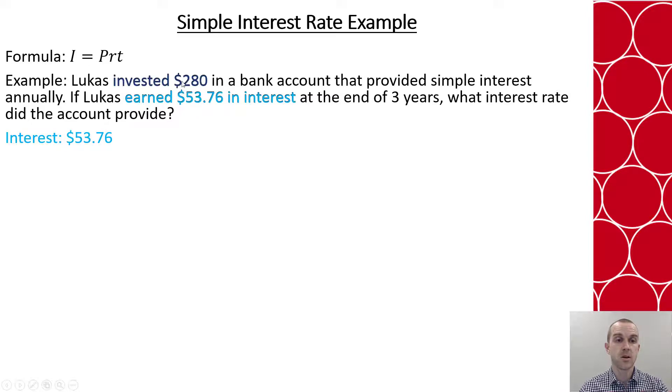So we know how much interest he earned. We know the original investment, our principal. We are told to figure out the interest rate, so that's unknown. And we're told that this is an annual simple interest over 3 years.